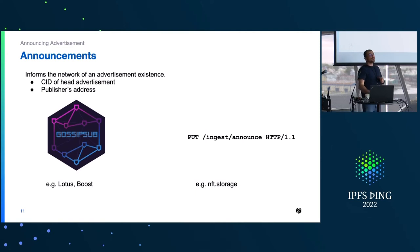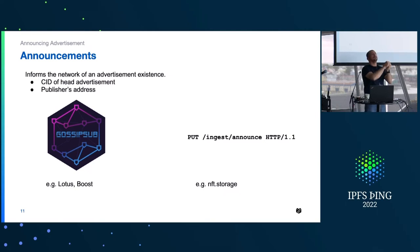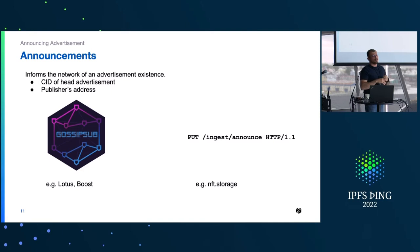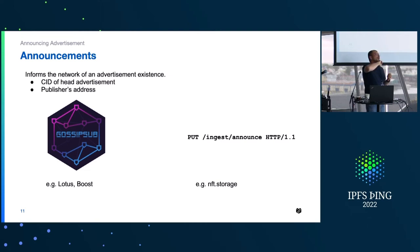So far we've talked about generating advertisements — the fundamental data structures we need to produce as an index provider. Now we'll talk about how you tell the network about them so that an indexer node can ingest the information and make it findable. The point where we tell the network is called an announcement. An announcement includes two things: the head of the advertisement chain — the latest entry in the chain — and the publisher address.